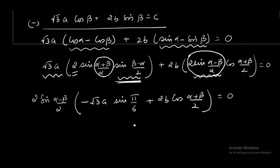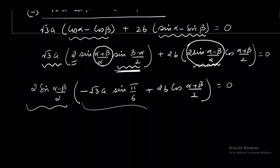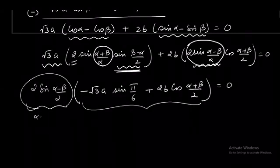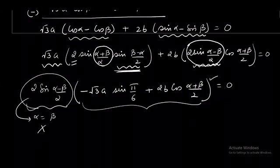What is the next step? We have two factors. Either first factor is 0, or the second factor will be 0. Suppose first factor is 0, then it gives me α equals β as the only possibility. Why? Because α and β belong to [-π/2, π/2]. But in the question, they have given us that α and β are different. Because they are different, this is not possible. We are left only with the second bracket. This has to be 0.